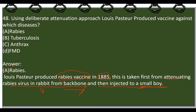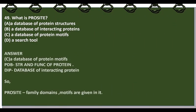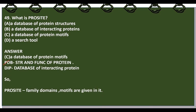What is PROSITE? PROSITE is the database of protein motifs. PDB (Protein Data Bank) provides structural and functional information on proteins. DIP (Database of Interacting Proteins) covers protein interactions. PROSITE is used to identify protein families, domains, and motifs — so the answer is option C, the database of protein motifs.